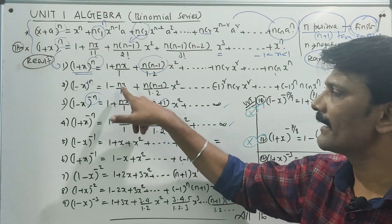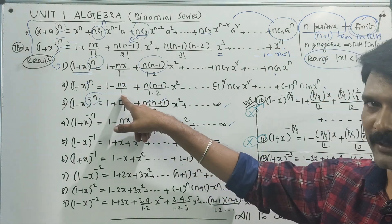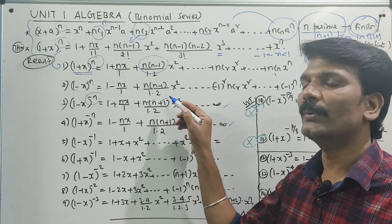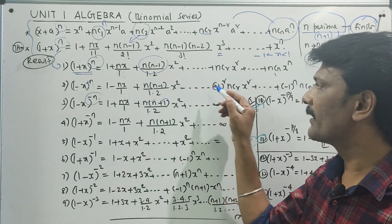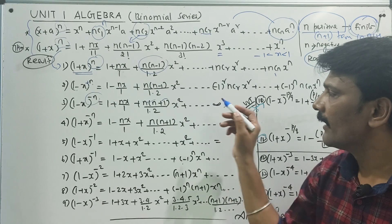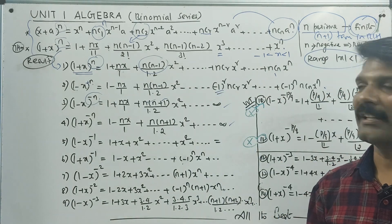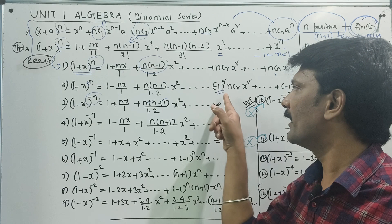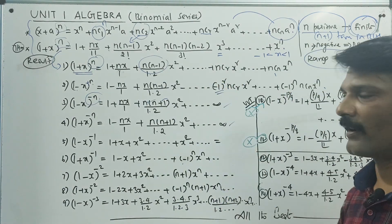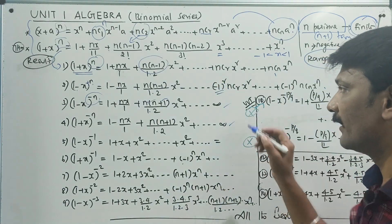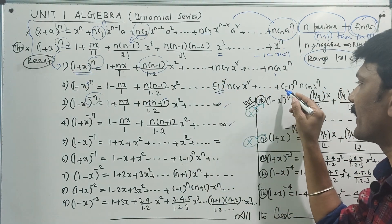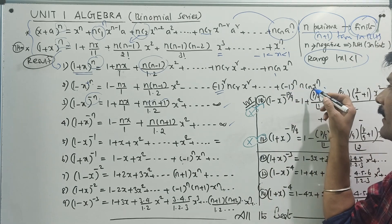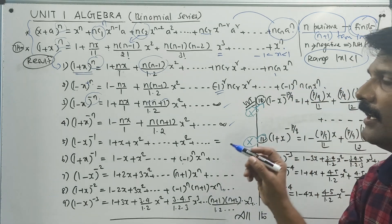1 minus x whole power n: with alternate sign, it is 1 minus nx by 1 factorial plus n into n minus 1 upon 1 into 2 x squared, plus etc. The general term is minus 1 whole power r, giving alternate signs up to ncn x power n.